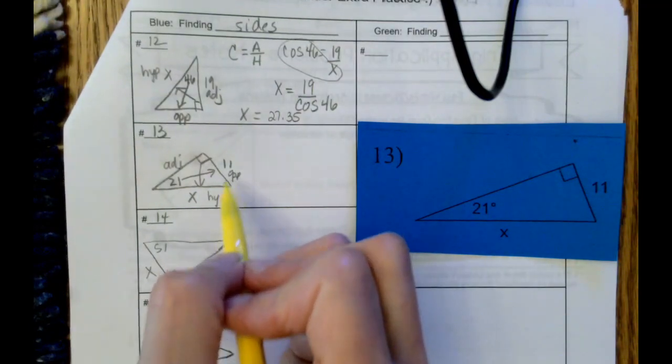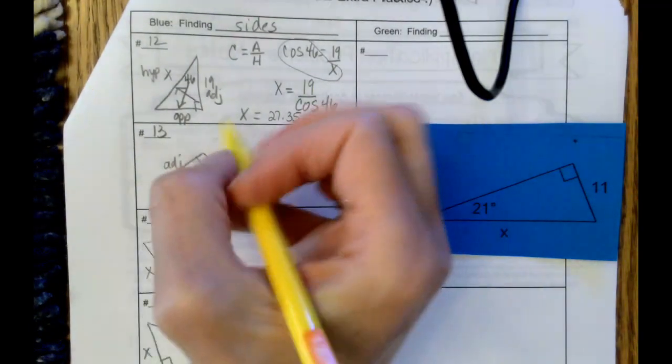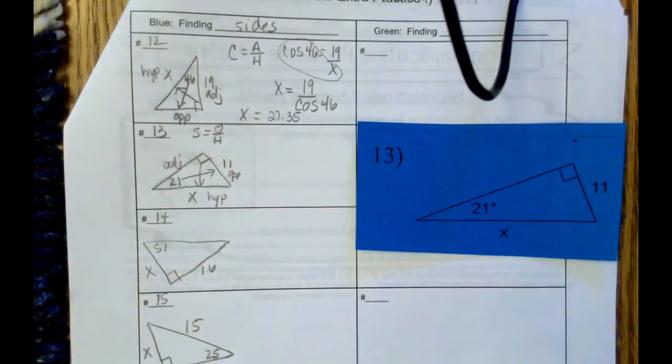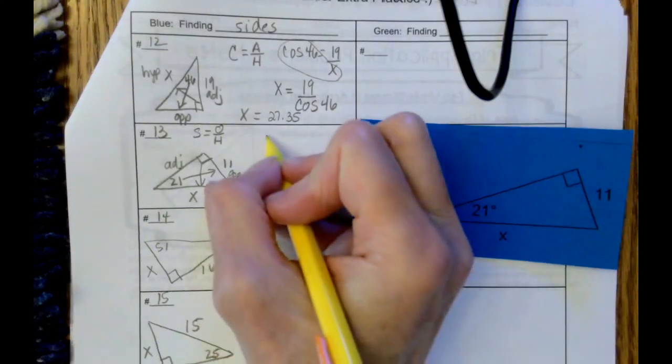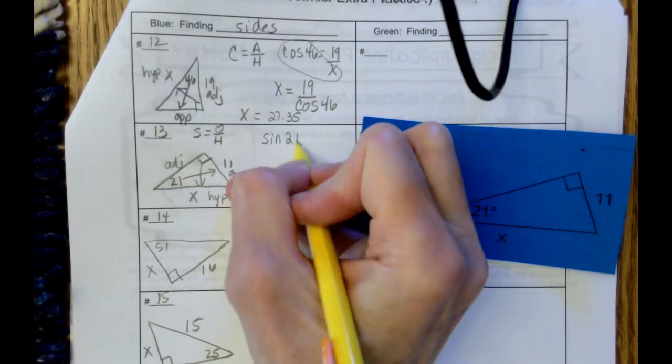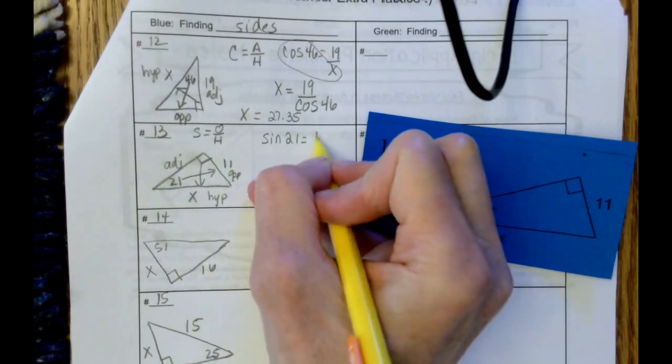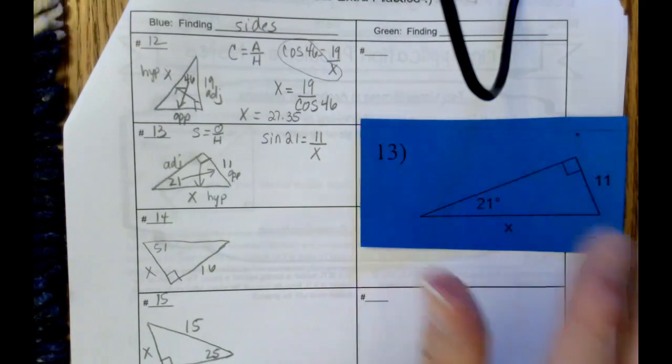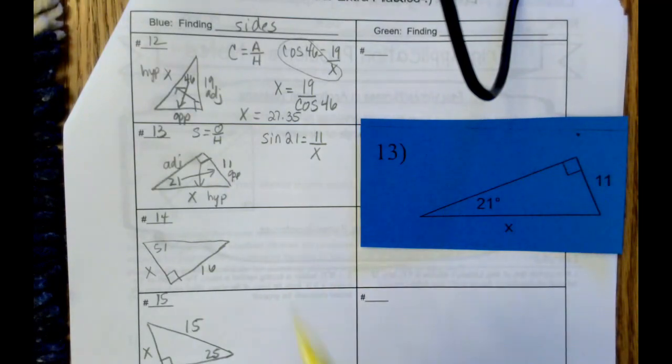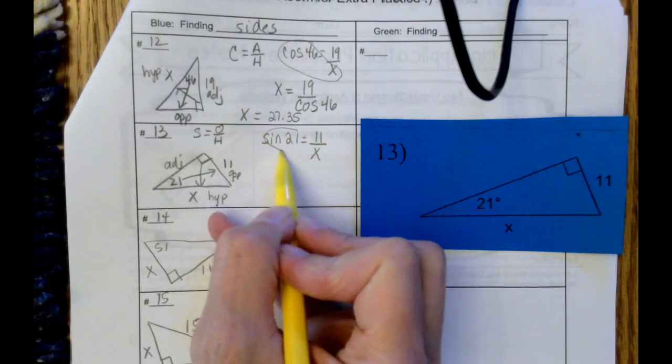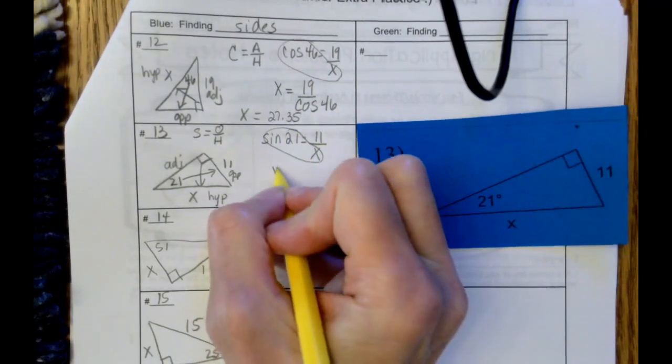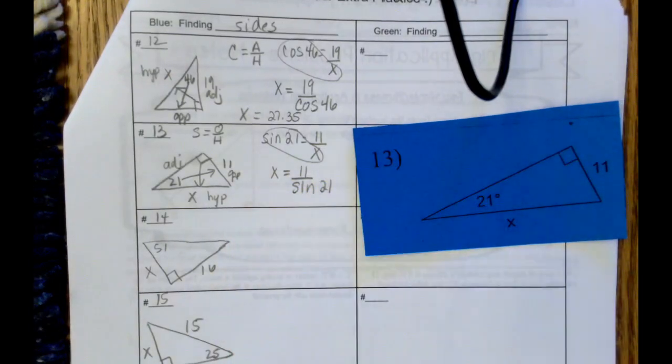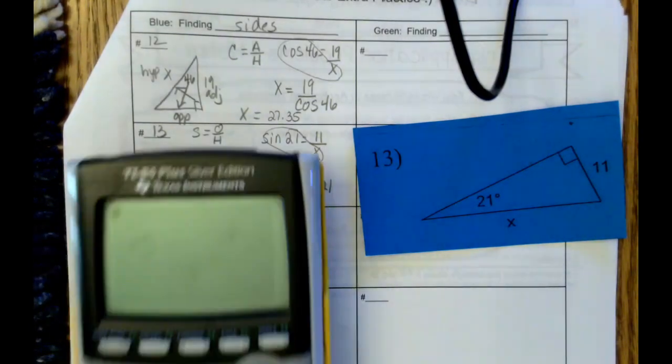We know the opposite, we want to find the hypotenuse, and the function that relates those is sine, which is opposite over hypotenuse. So when we set this up, it's going to be sine of 21 equals 11 divided by x. The variable is in the denominator, so my little saying is when the variable is down low, we switch a row, and we're taking these two values and we switch. So x is going to equal 11 divided by sine of 21, and then we grab our calculator and type that in.